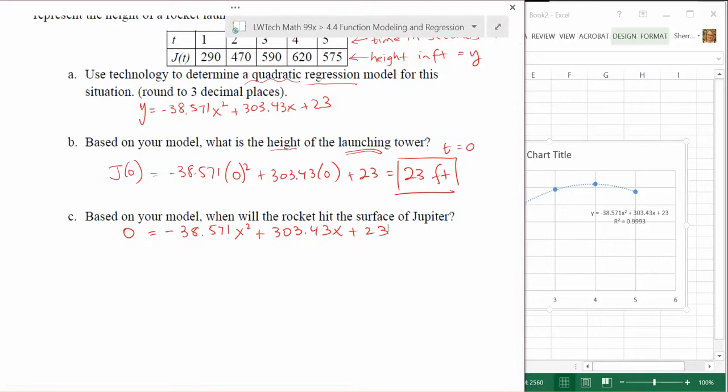All I have to do is solve this equation now. Keep in mind I have an x squared and an x term, so I can't combine those as they're not like terms. I need to get one side equal to zero, which we have. I'm going to use the quadratic formula with messy terms like this. There's no way factoring is going to be an effective tool. We're going to let A be negative 38.571, B be 303.43, and C be 23. We're going to go through the process of solving using the quadratic formula. That's negative B plus or minus the square root of B squared minus 4AC, all divided by 2A.